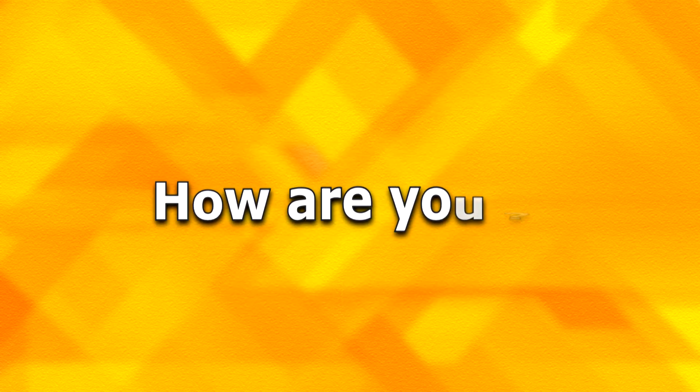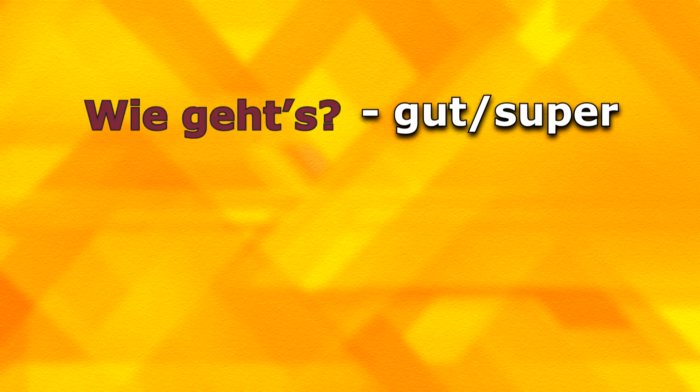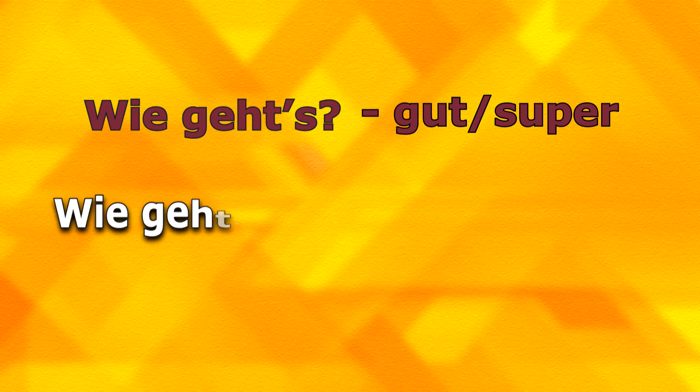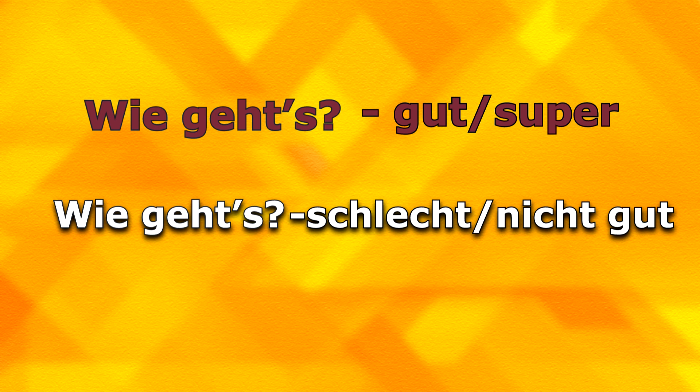Let us see how we say 'how are you' in German. It depends whether the usage is formal or informal, like amongst family or friends. The basic structure to use is 'Wie geht's.' There are two ways to respond. Either it could be a positive response — that is, you say 'gut' or 'super.' Wie geht's gut means I am doing well, I am fine, all good at my end. The second option is saying 'schlecht' or 'nicht gut,' which means I am not doing that well, things are not that smooth.